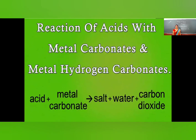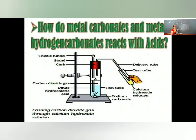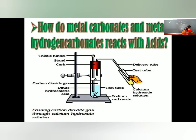Next chemical property of acid: reaction of acid with metal carbonates and metal bicarbonates. Whether it is carbonates or bicarbonates, the products formed are the same — three products: salt, water, and carbon dioxide. For example, HCl and sodium carbonate react to produce sodium chloride, plus water, plus CO₂.